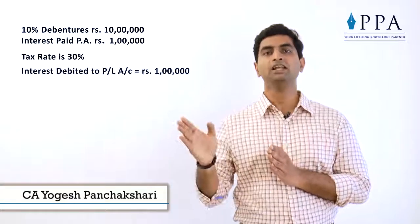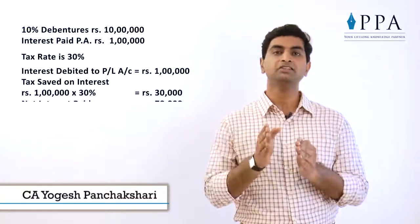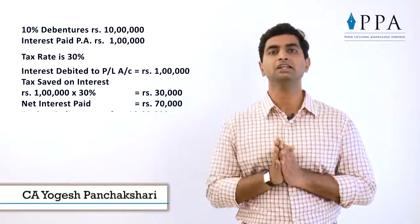For example, if we have issued debentures of Rs 10 lakh at 10%, that means apparently the KD, that is cost of debenture, is 10%. But we cannot forget that when we pay the debenture interest of 1 lakh per annum, it is debited to the P&L account which ultimately saves our tax. If the tax rate is 30%, it means by paying 1 lakh we are going to save tax of Rs 30,000 — so the net interest we pay is Rs 70,000 against Rs 10 lakh of debenture.